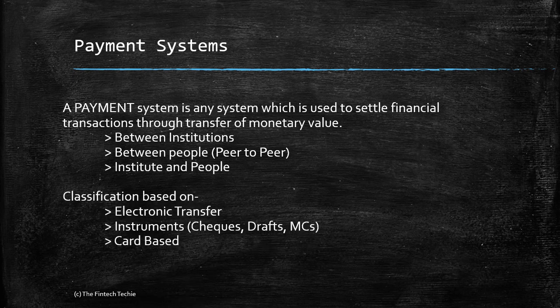The classification could be further based on whether it is instrument-based — meaning there is an underlying physical check, draft, or manager's check — or it could be electronic, meaning there is no physical backing of any kind of instrument, or it could be card-based, which could be a debit card or a credit card.